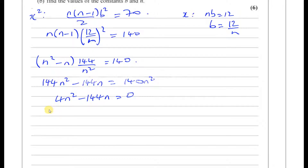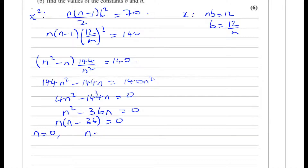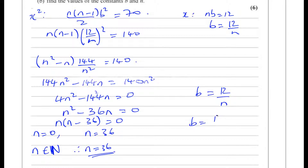Factorizing by dividing by 4: n squared minus 36n equals 0, so n(n − 36) equals 0. Therefore n equals 0 or n equals 36. Since n is an element of the natural numbers, which don't include 0, n equals 36. Then b equals 12 over 36, so b equals 1 over 3. Therefore n equals 36 and b equals 1/3.